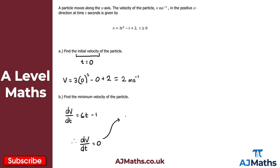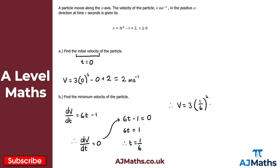Setting dv/dt equal to zero: 6t minus 1 equals zero, so 6t equals 1, giving t equals one sixth. Be careful — this isn't the minimum velocity itself; it's the time when the velocity is minimized. So I take t equals one sixth and substitute it back into the velocity equation: v equals 3(1/6)² minus 1/6 plus 2.